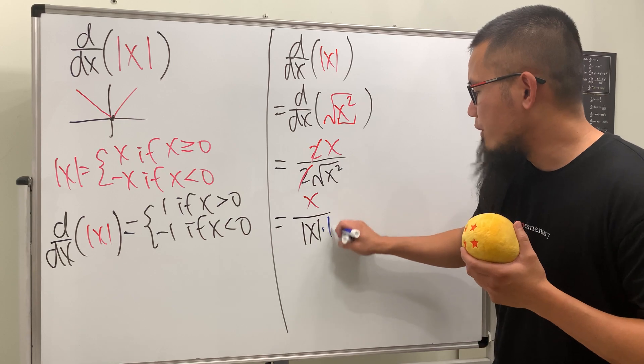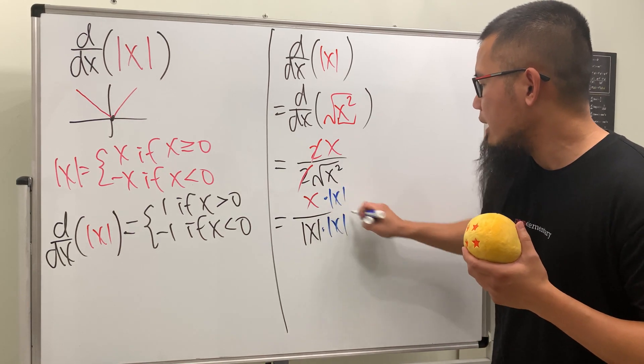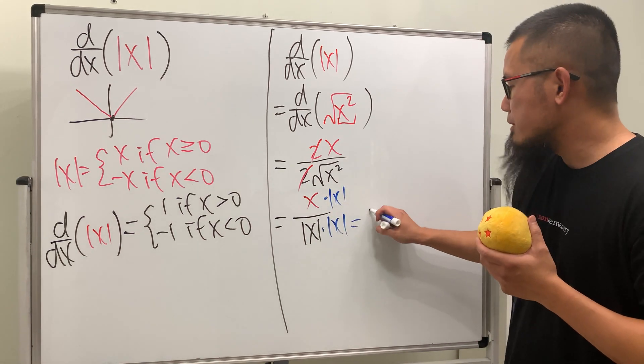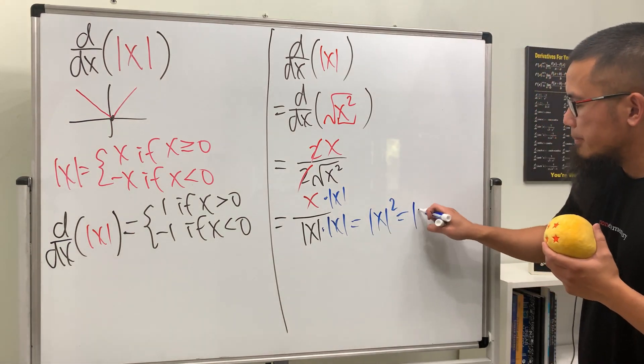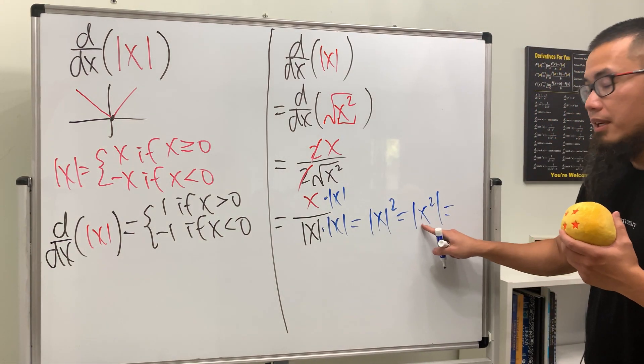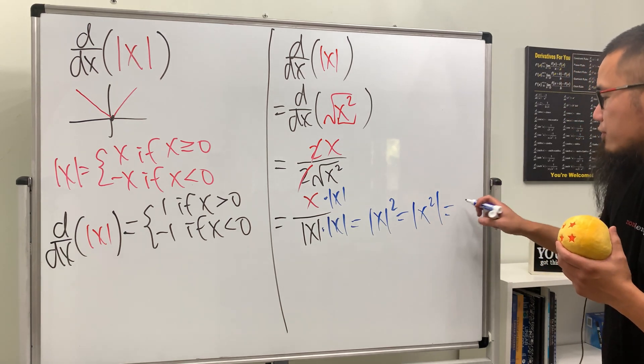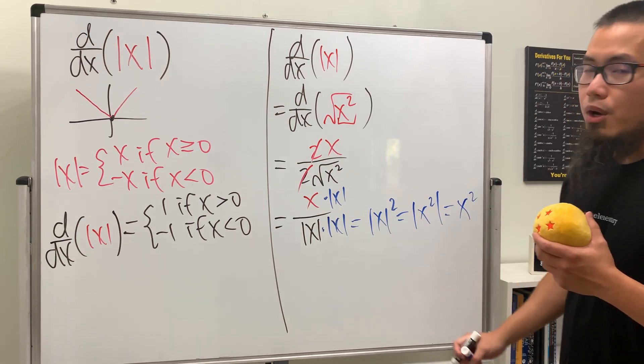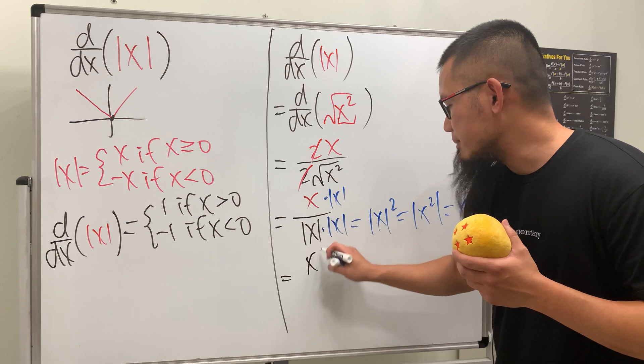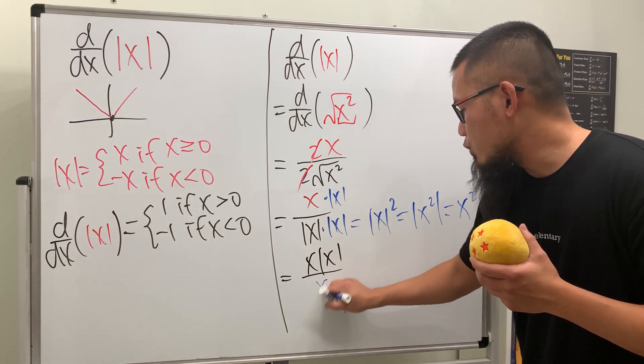Now we multiply the top and bottom by absolute of x again. You will see why: we get absolute of x squared, and we can put the square inside. Because the inside is always positive, we don't need the absolute anymore, so this is just x squared. This is x times absolute of x over x squared, and you see this and that will cancel.